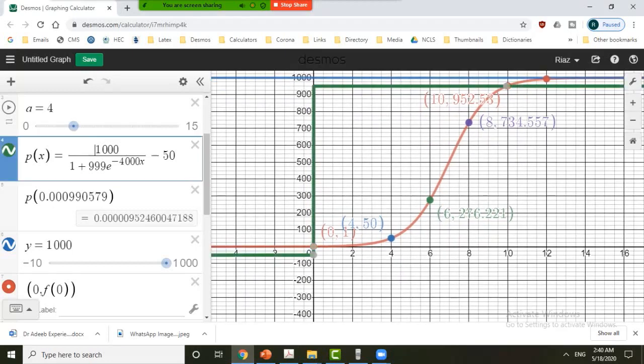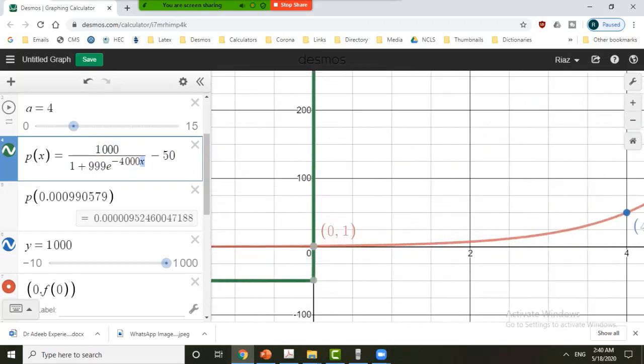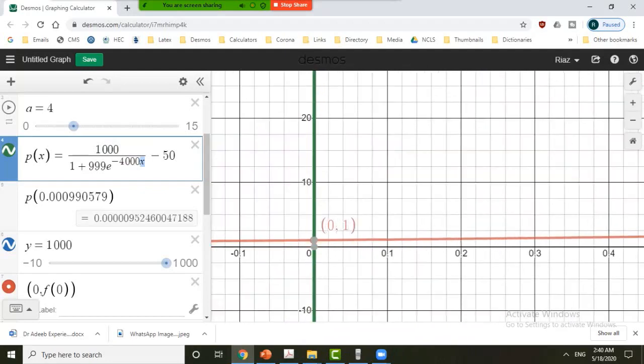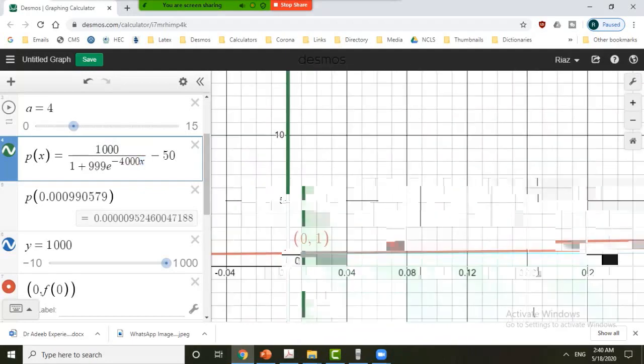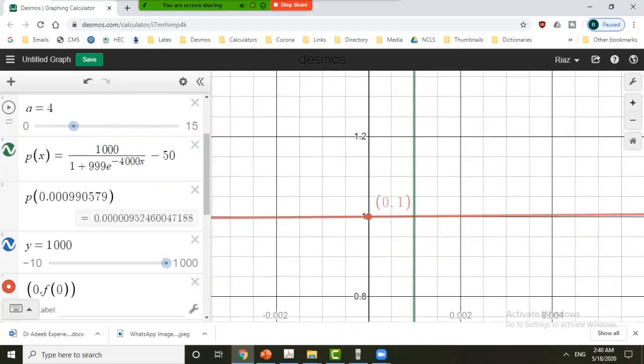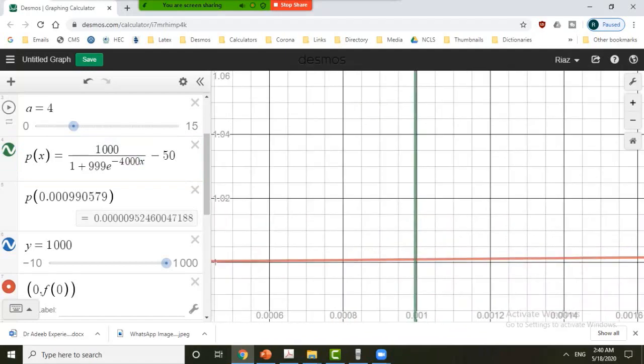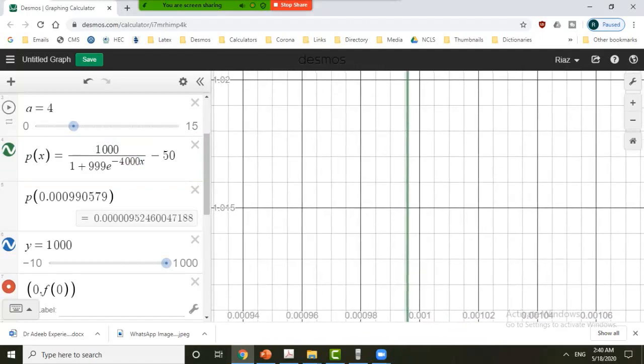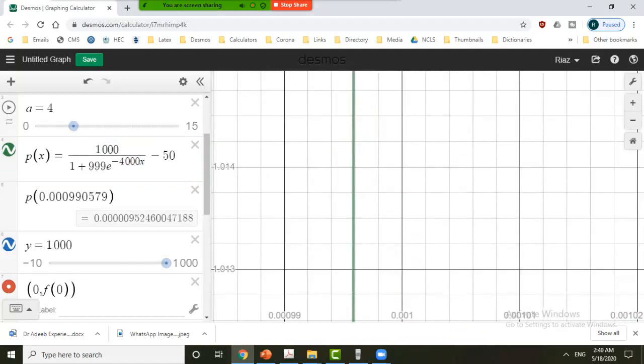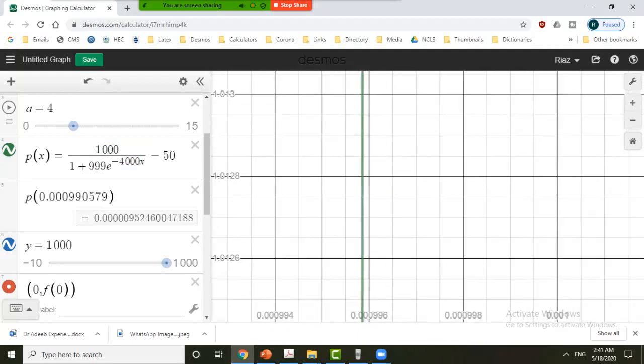In Desmos you can see that if we write that function in this form minus 50, and the value of x here represent the value of k. So the value of k or x, we can zoom it. We can further zoom it and we can find that the value of k is really where the graph passes through x-axis.